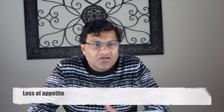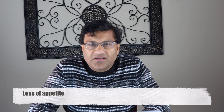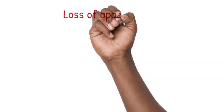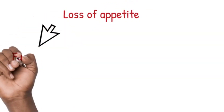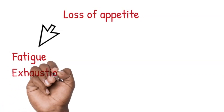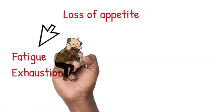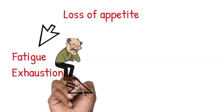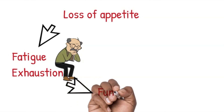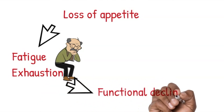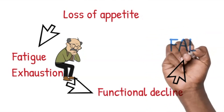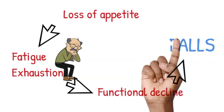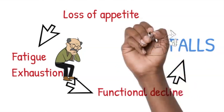Symptom number one would be loss of appetite. Loss of appetite in an older adult should raise a high index of suspicion that something might be going on. Loss of appetite coupled with decreased fluid intake can lead to other problems — they become more tired, fatigued, even exhausted, are more likely to be immobilized, functionally less active, and more likely to get falls.